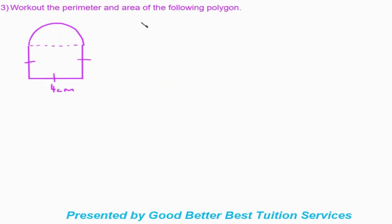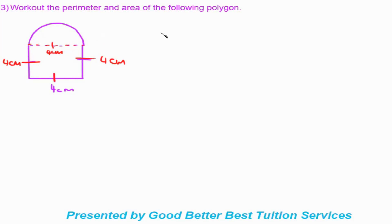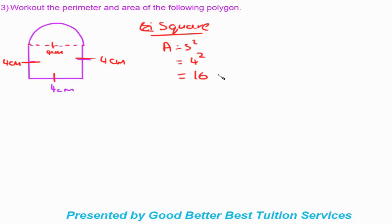The next example says: work out the perimeter and area of the following polygon. We have four centimeters indicated with the single-dash lines, so three sides are four centimeters each, making this a square. On top of the square we have half a circle, separated by a dotted line. Let's work out the area first, starting with the square: area equals side squared, so four squared equals sixteen centimeters squared.